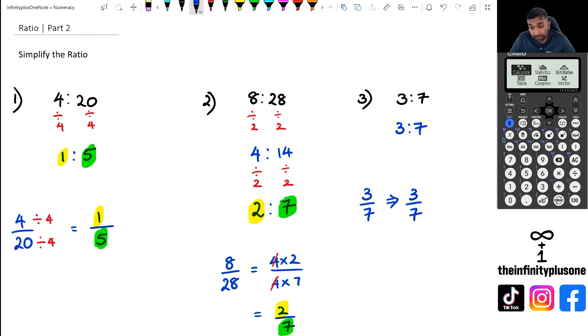So I guess the main message here for simplifying ratios is that one tip is to convert it into a fraction and then simplify it. The other is remembering that whatever you do on the left hand side you've got to do on the right hand side as well, but it can't be pluses or minus, it can only be multiplication and division. So that's just something to keep in mind as well as you work through simplifying ratios.